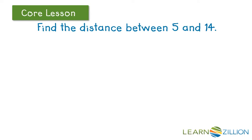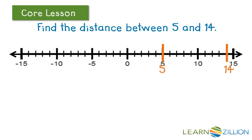Find the distance between positive 5 and positive 14. We can graph these two positive numbers on a number line, and then count the spaces between them. We have a distance of 9. Now, 14 minus 5 is positive 9, and 5 minus 14 is negative 9. But if we took the absolute value of that difference, we would get the distance of positive 9.